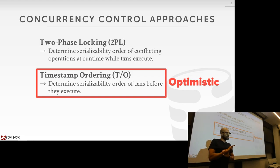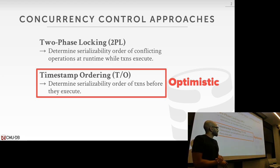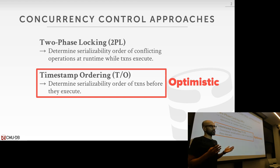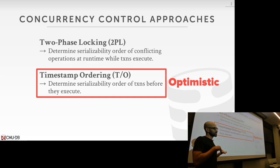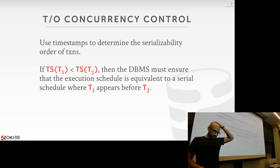There are two timestamp ordering protocols we'll cover in this lecture. One is called basic timestamp ordering, and another is called optimistic concurrency control. It's a little confusing because they're both optimistic and both timestamp-based — this is just the nomenclature the community has come up with. Let's get started.